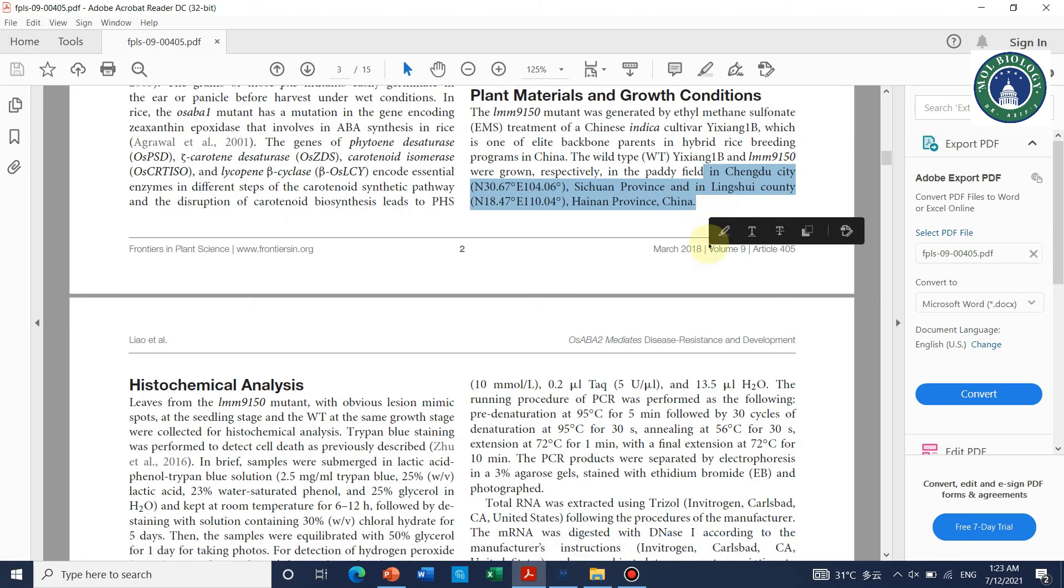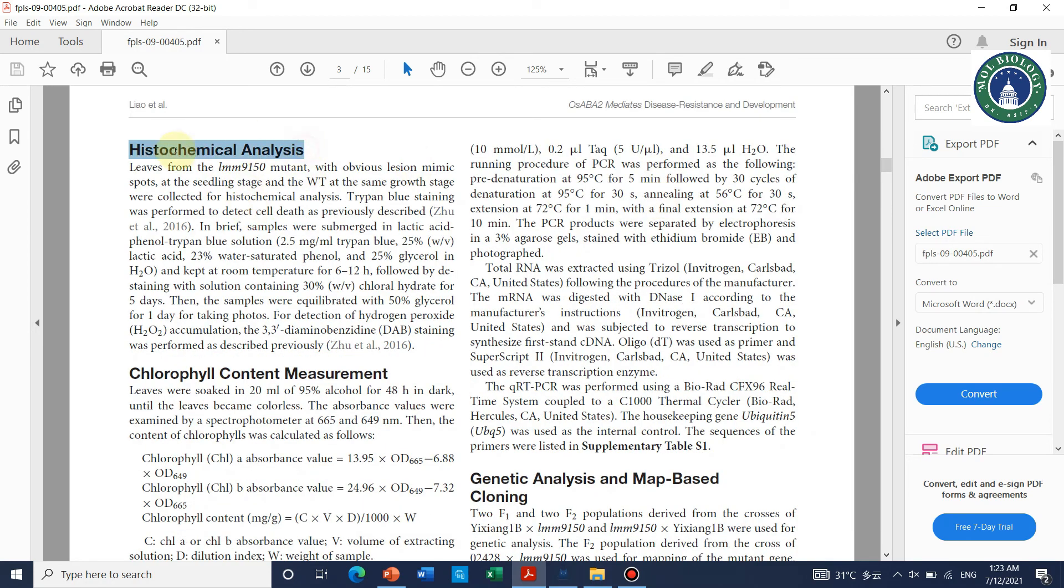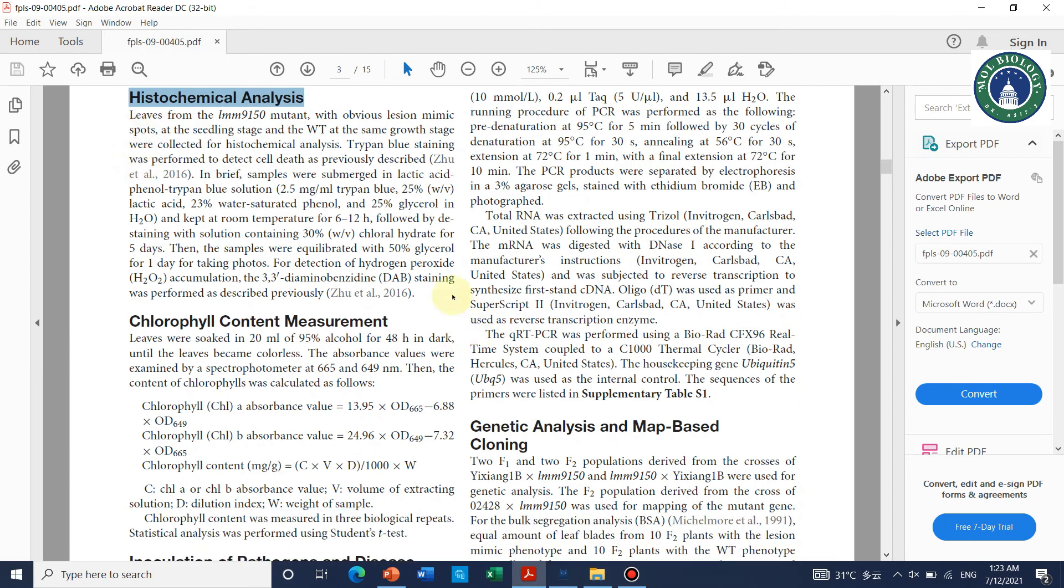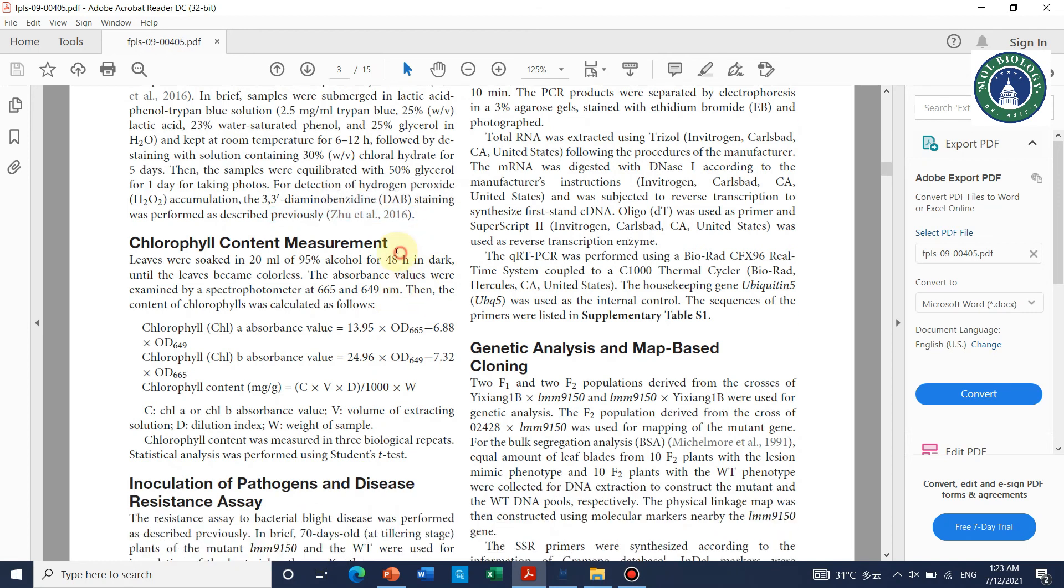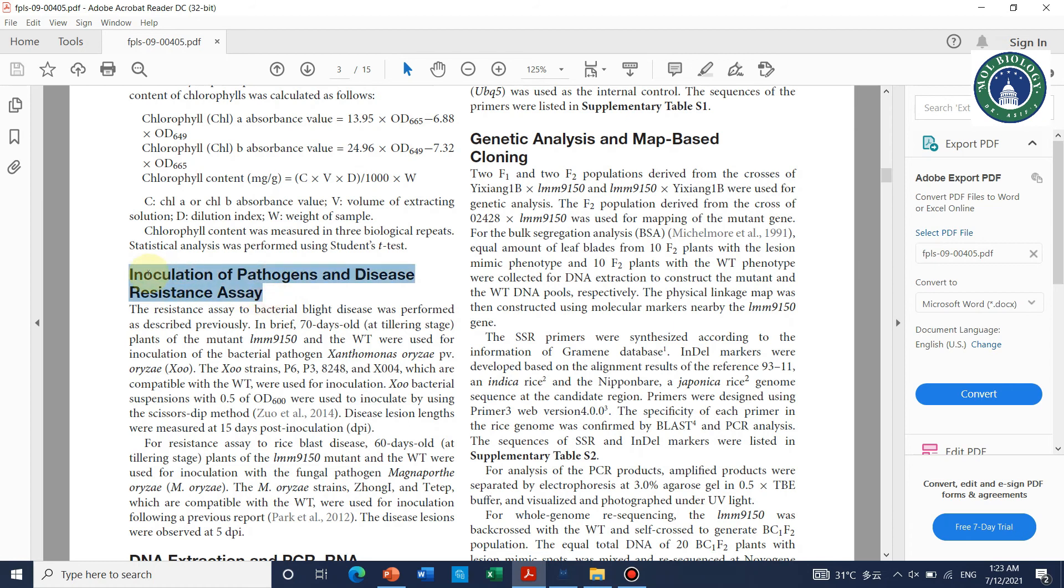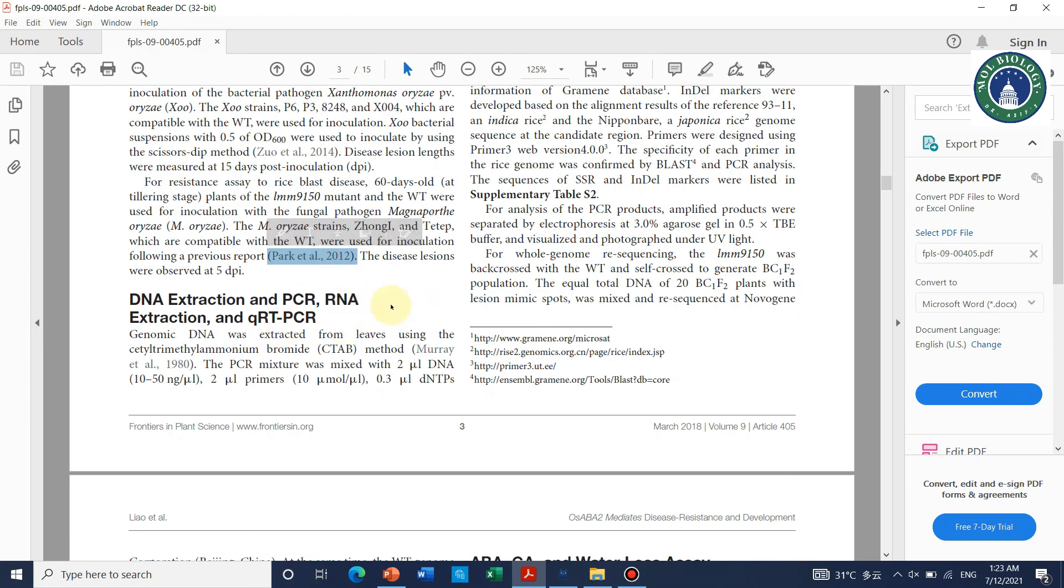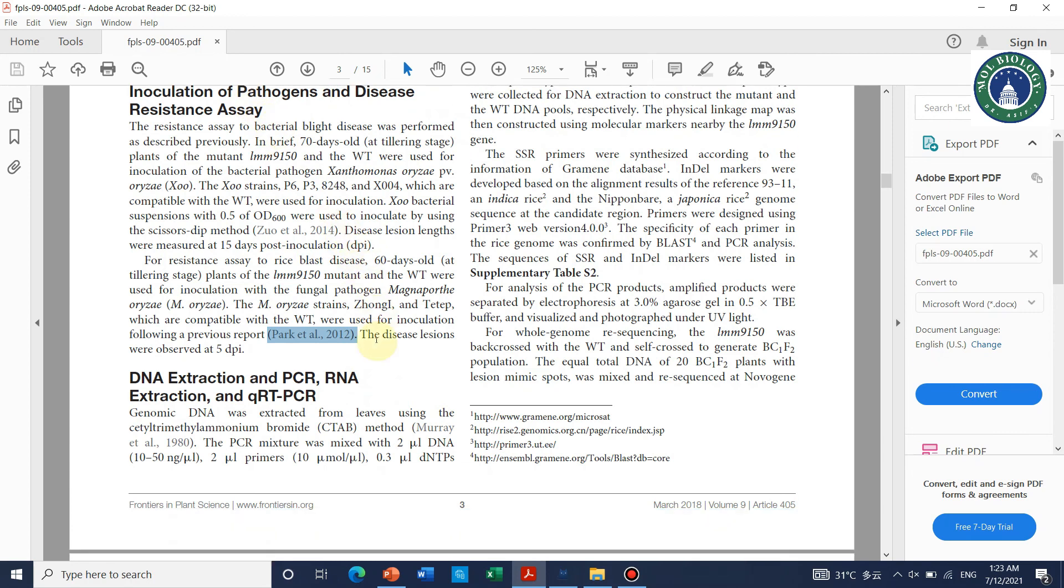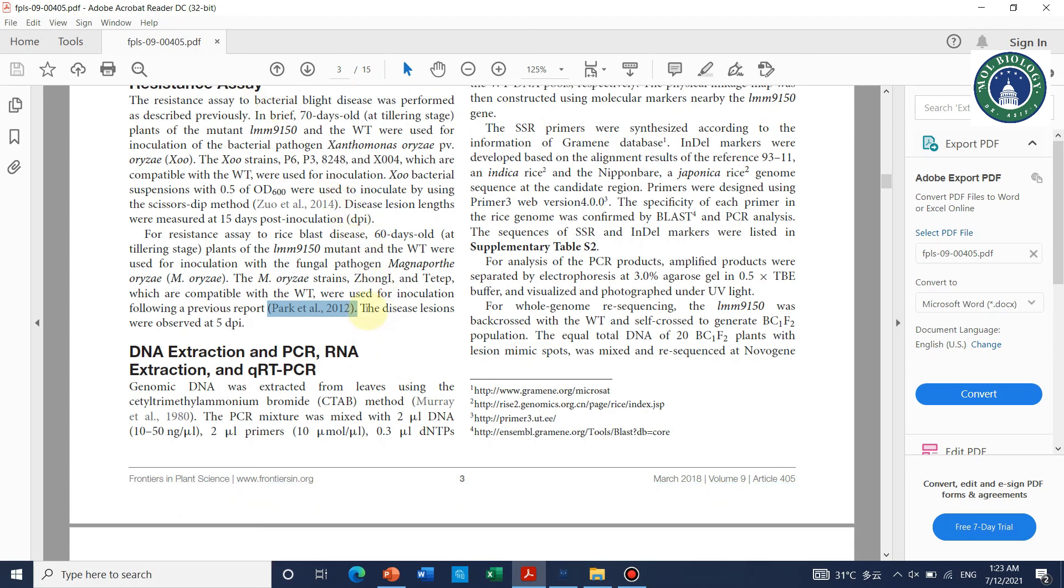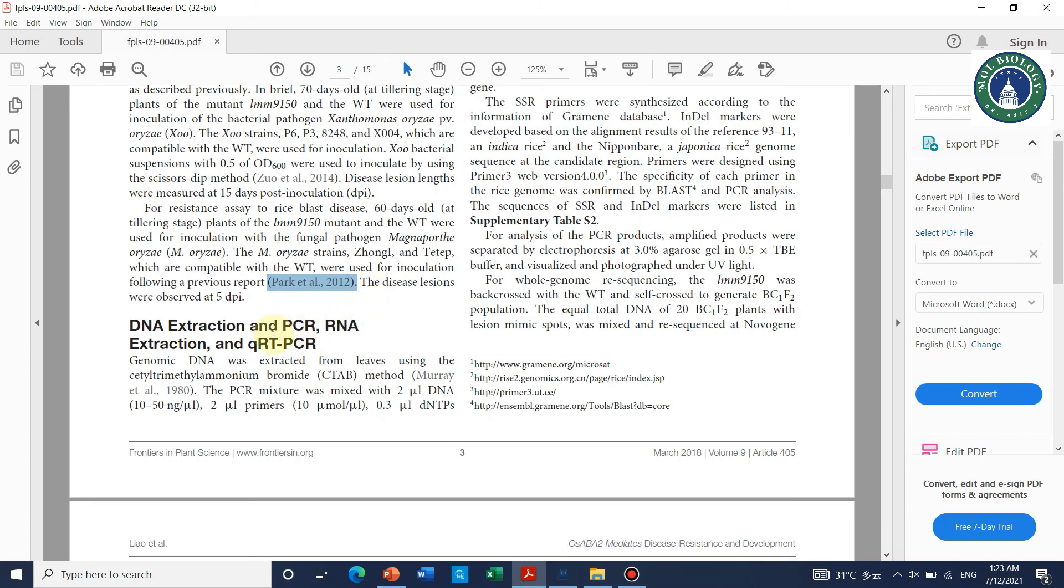Here is the method section. Here there is the histochemical analysis and here I have mentioned that I have described the previously reported method. And here is the complete detail how I checked chlorophyll contents. And here is the inoculation of pathogens and disease resistance as a complete protocol step by step. And even I have mentioned the previous citation. You can also use this, but if you are discussing your thesis, you have to give all the details of each and every step completely. Here is the method of DNA extraction and RNA extraction and so on.